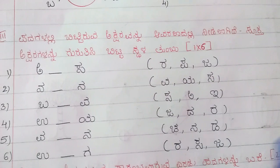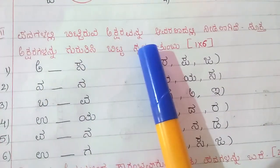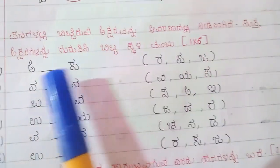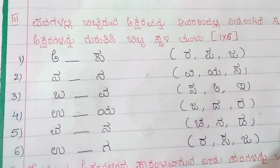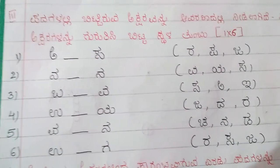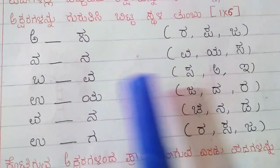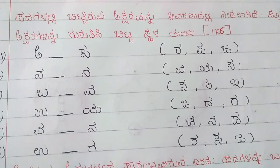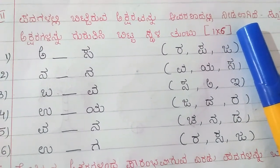The next question carries 6 marks. The child has to identify the correct letters to fill in the gaps and complete the words. This main question carries 6 marks.